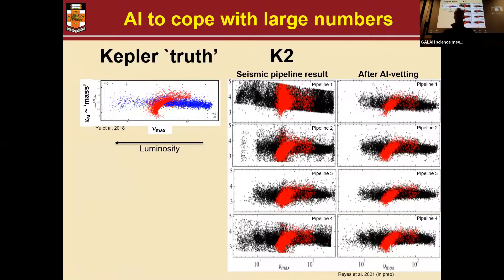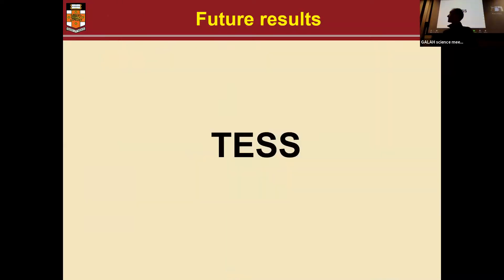And this is what you get after you vet the results using that AI method. And it looks, as the prime minister said, couldn't be better. Or how good is that? And so you can really start to see the features like we see in Kepler. Obviously, the uncertainties are larger because there's only three months of data per K2 star. But it's very good.